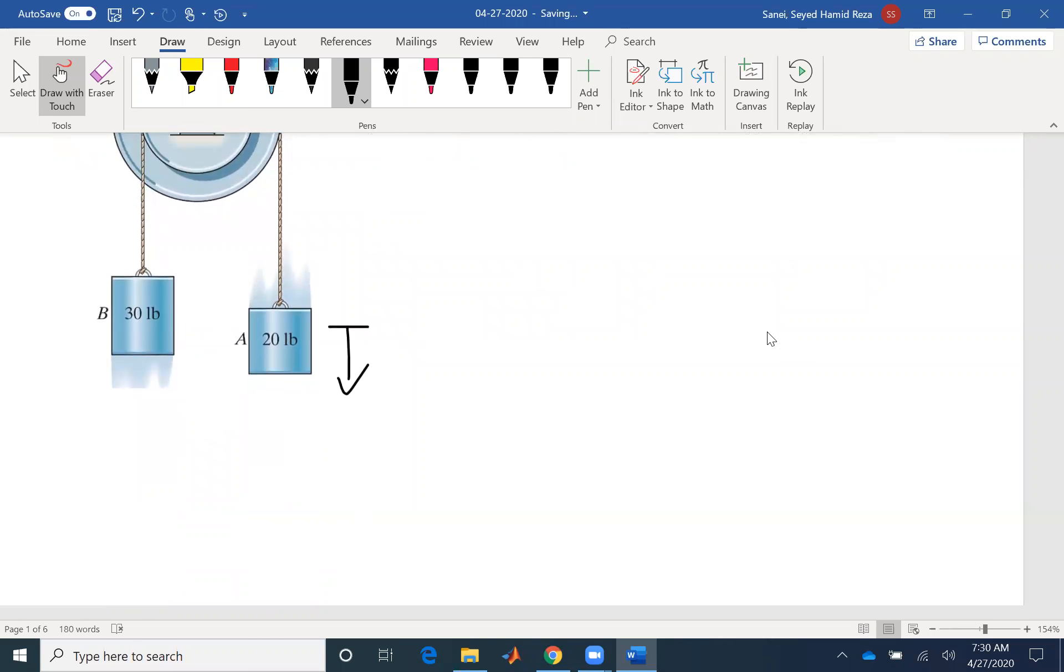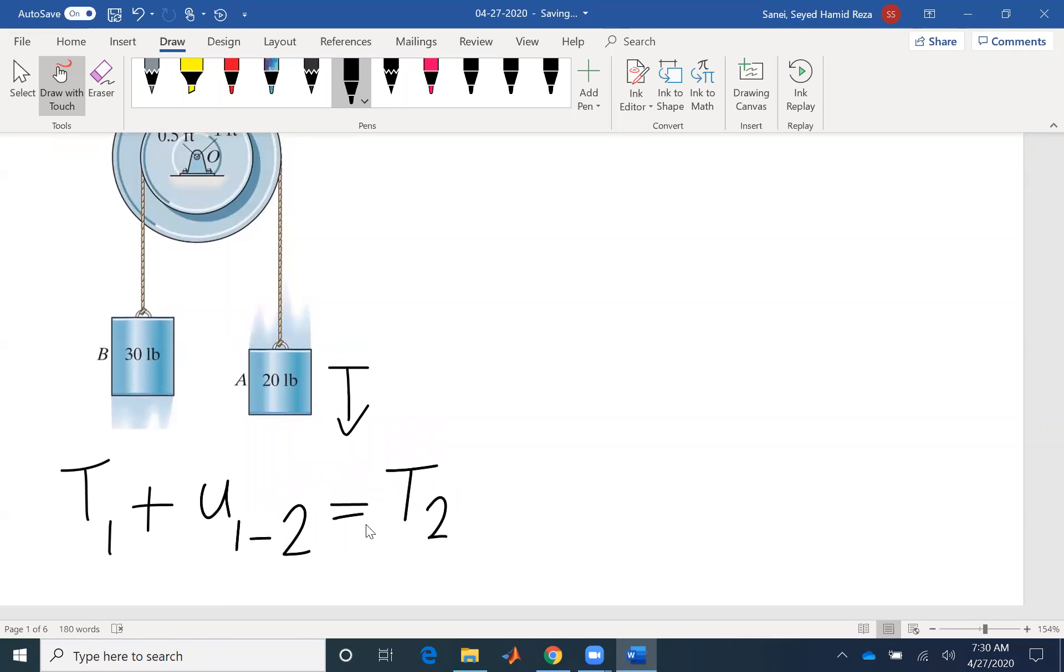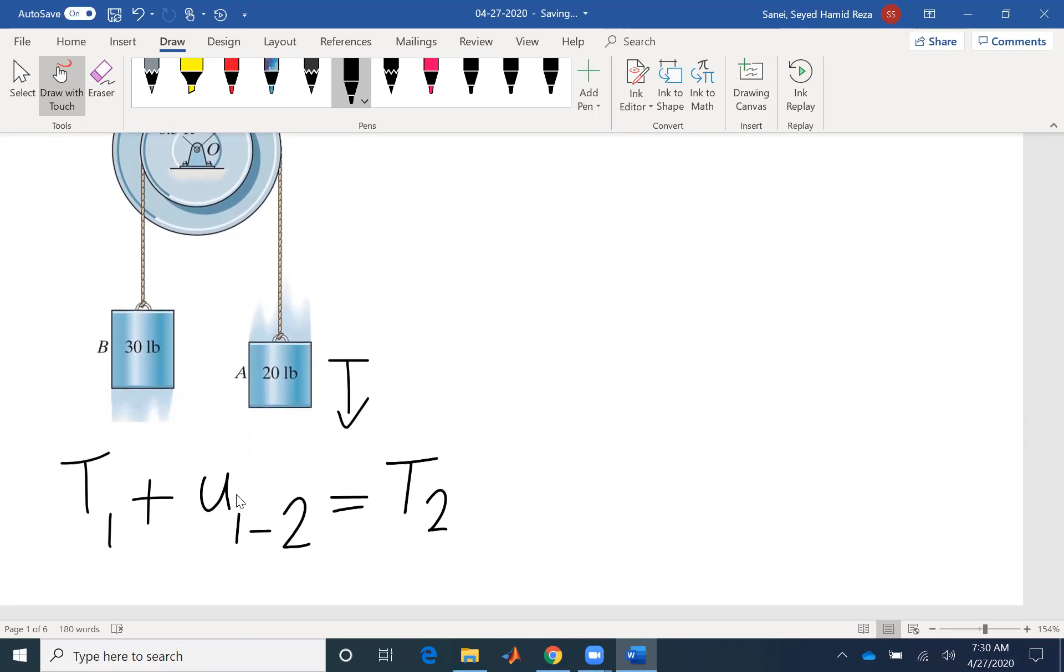So the principle of work and energy is saying that the initial kinetic energy for the whole system plus the work that we do on the system would be equal to the final kinetic energy. And you need to pay attention that these values are for the whole system. Because we have the angular velocity both at initial and final stage, so none of these kinetic energies would be zero.